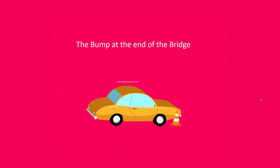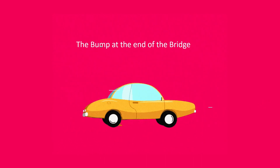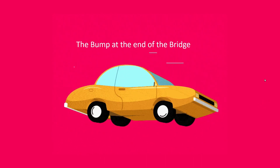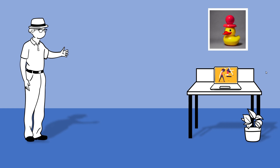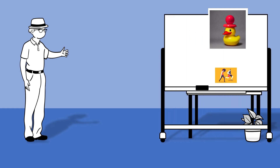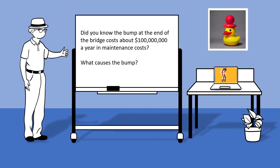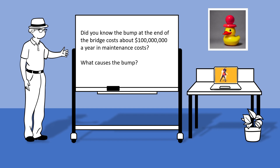Hi, I put together a quick presentation about the bump at the end of the bridge, going kind of old school with a PowerPoint presentation. Did you know the bump at the end of the bridge costs about a hundred million dollars a year in maintenance costs? And I believe people think that it costs another hundred million dollars a year to pay for the vehicles and the drivers that have been injured from the bump at the end of the bridge.